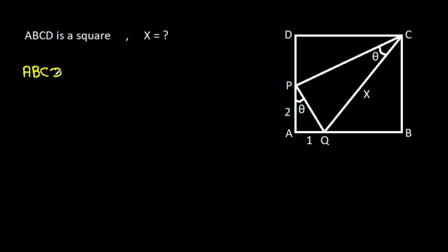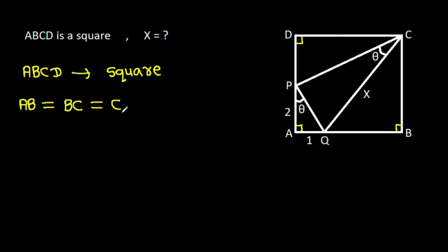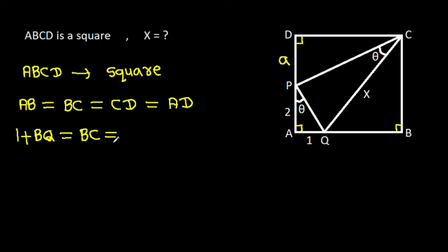ABCD is a square, which means all angles will be 90 degrees and AB will be equal to BC, equal to CD, equal to AD. Suppose PD is A. Then AB equals AQ plus BQ, that is 1 plus BQ. It is equal to BC, equal to CD, equal to AD, which is A plus 2.